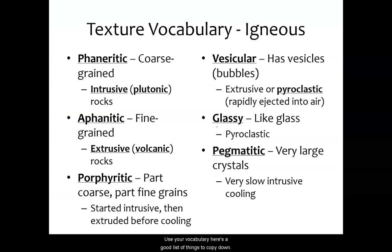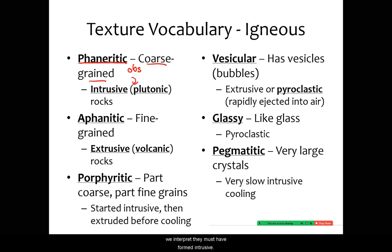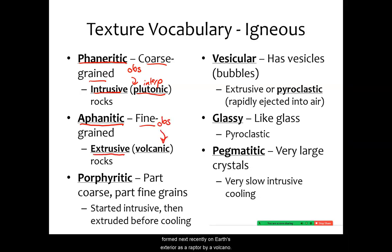Here's your vocabulary — a good list of things to copy down. We've got phaneritic rocks, that's our term for coarse-grained, and if we see that observation, we interpret that they must have formed intrusively. In contrast, we have aphanitic rocks — those are fine-grained. That's the observation, and the interpretation is that they formed extrusively on Earth's exterior, as erupted by a volcano.